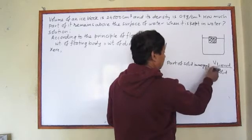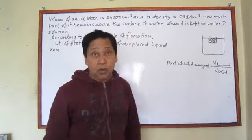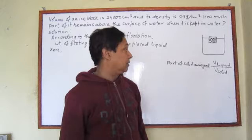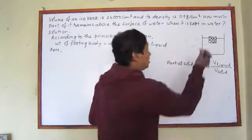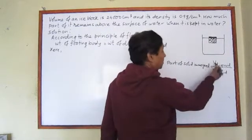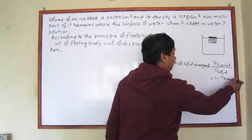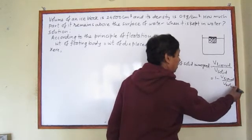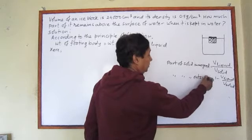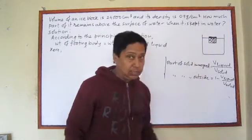What part of this solid is immersed into the liquid? This is equal to volume of displaced liquid upon volume of solid. And what part is outside the liquid? If this much is the part inside the liquid, then the part outside the liquid should be 1 minus V_liquid upon V_solid. This is the part of solid outside the liquid. Using these two equations, we can find the part immersed and the part outside.